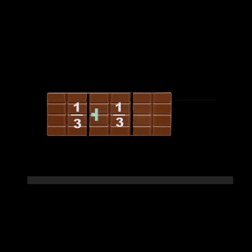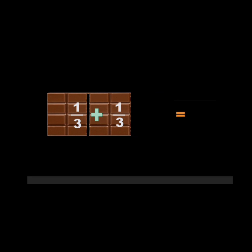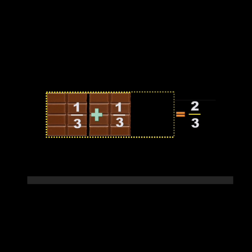Let us take another example. Here one third is added to another one third. The total chocolate bar is split into three parts, so the denominator is three. Now what is the fraction of this total chocolate bar? Here we are taking two out of three parts, so two thirds is the sum.